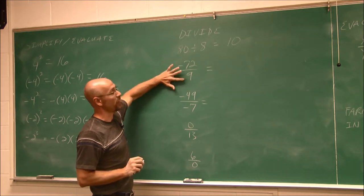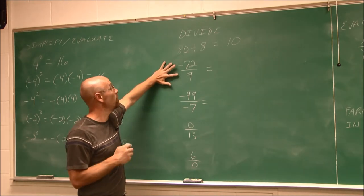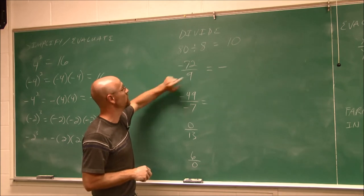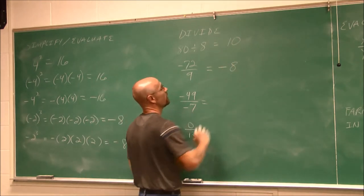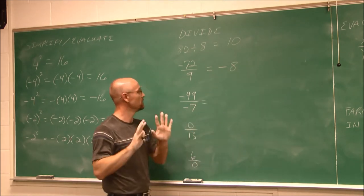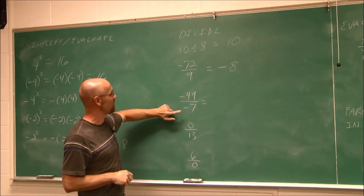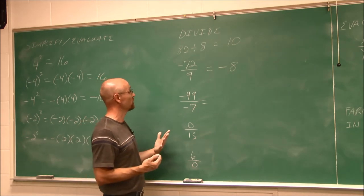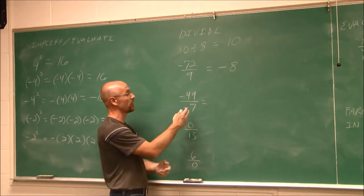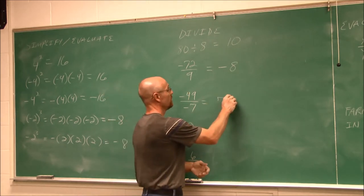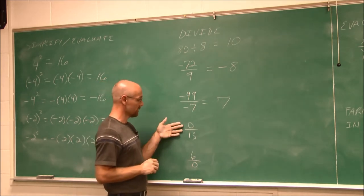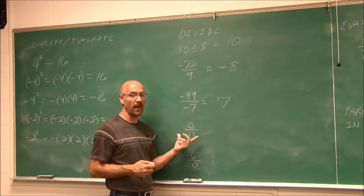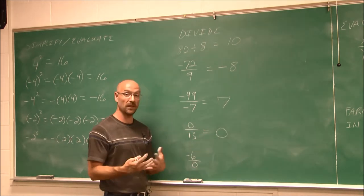Negative 72 divided by 9: I assess — how many negatives do I have? Just one — that's an odd number of negatives, so my answer is negative. 72 divided by 9 is 8, so the answer is negative 8. Negative 49 divided by negative 7: I have two negatives — two negatives gives me a positive. 49 divided by 7 is 7, so the answer is positive 7. 0 divided by 13: 0 is neither positive nor negative, and 0 divided by any number is 0.